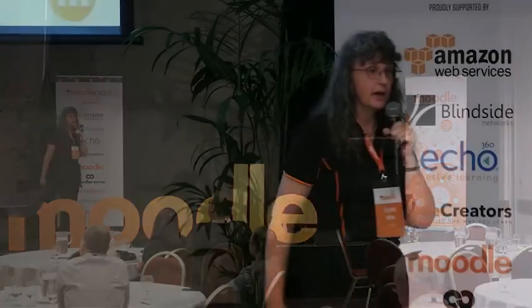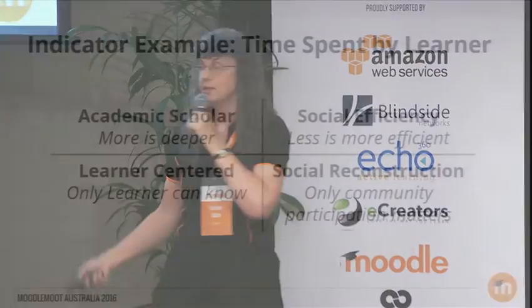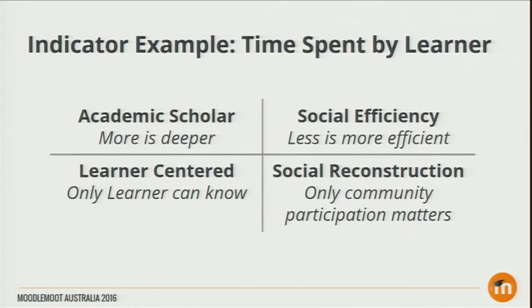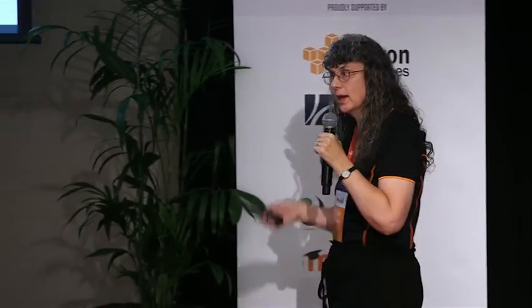If you are in a learner-centered environment, only the learner knows if they've spent the right amount of time on what they're learning. And if you are in a social reconstruction environment, you don't really care how much time they spend learning it — you care whether they're able to then spend their time participating in their community of practice. So how are we going to develop analytics that aim towards these different intents and purposes? We need to start by asking: what is the kind of learning your institution intends to provide, how do we measure it, what are the indicators, and what kinds of notifications and supports can we provide?